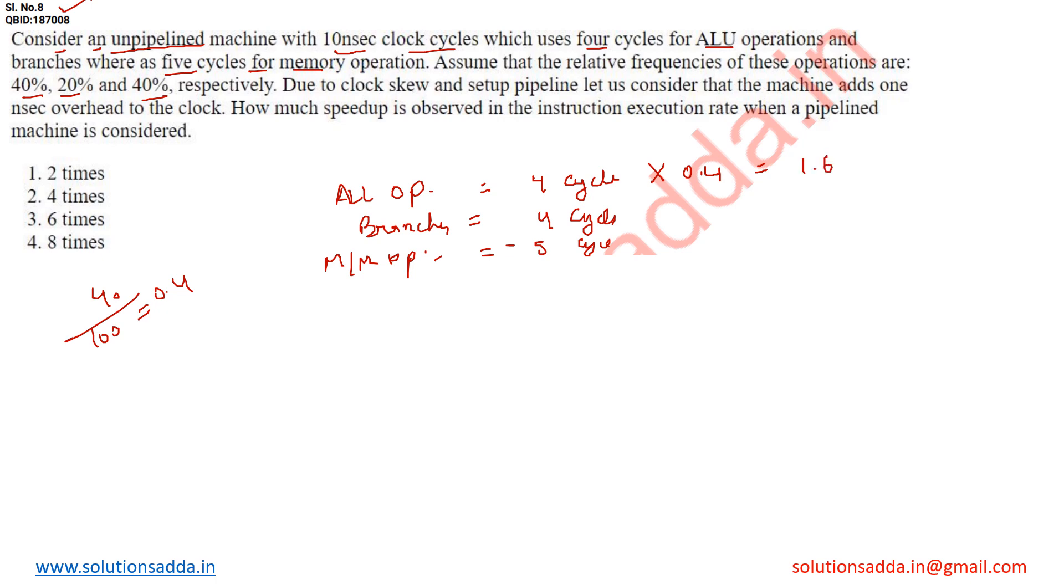Similarly with branches, 4 cycles times 0.2 because it takes 20%, equals 0.8. Then we have 5 cycles for memory operation, again 40%, so 5 times 0.4 equals 2.0. Adding these values gives us 4.4 nanoseconds.